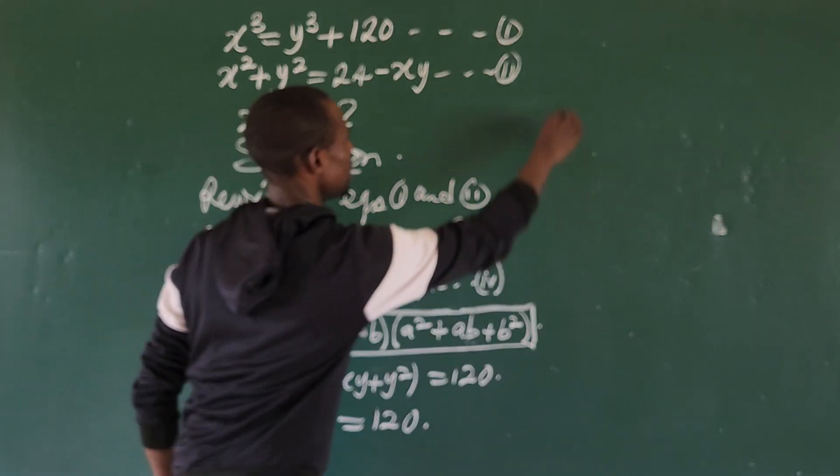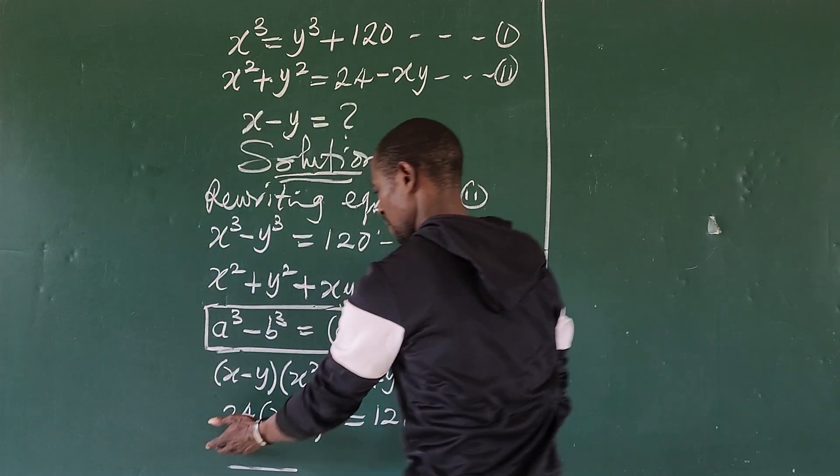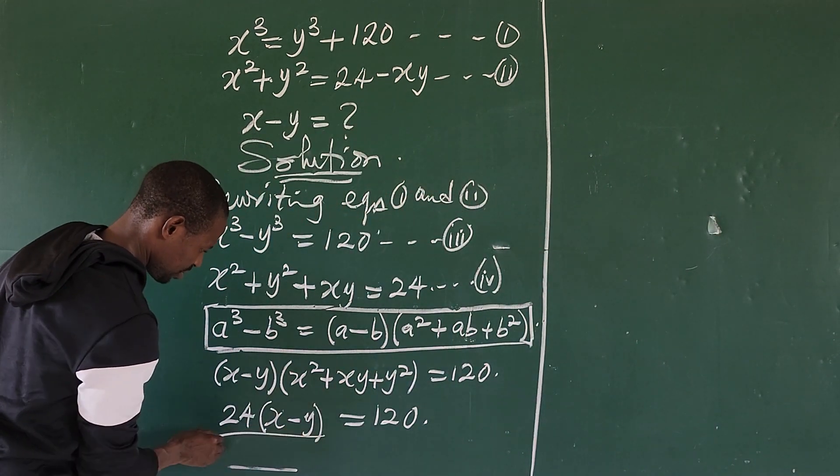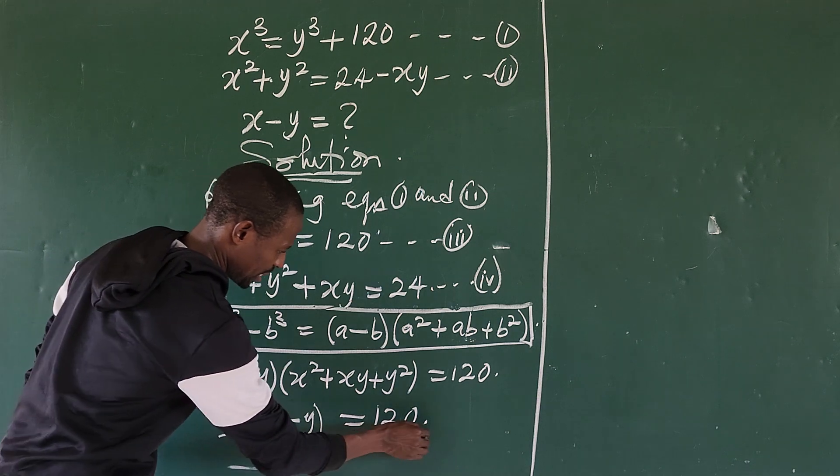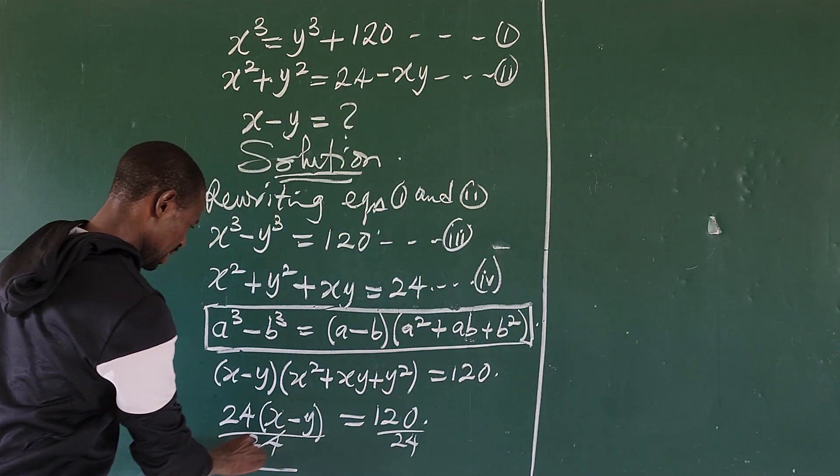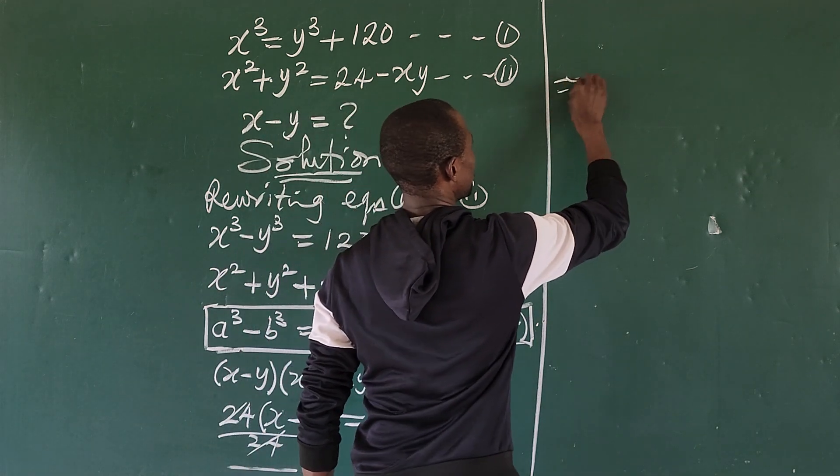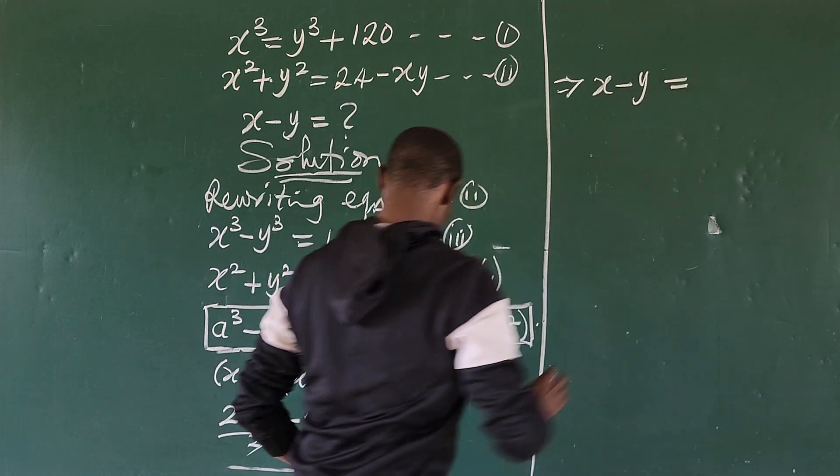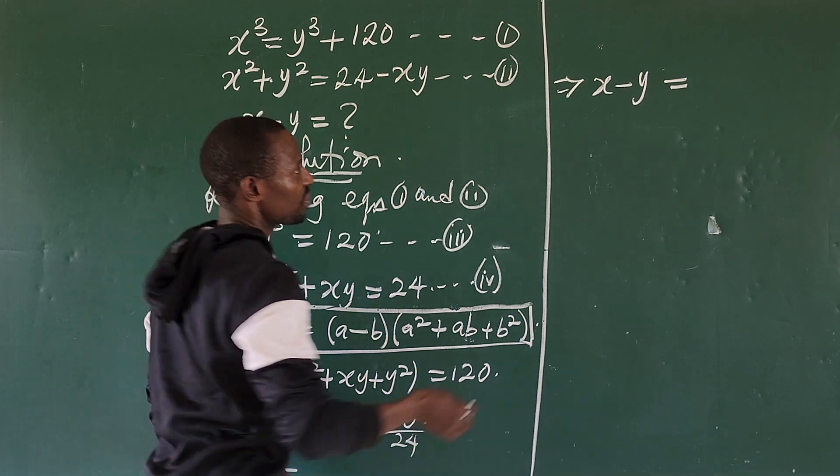Let's divide through by 24. This leaves us with x - y equals, if we divide 120 by 24, this will give us 5.